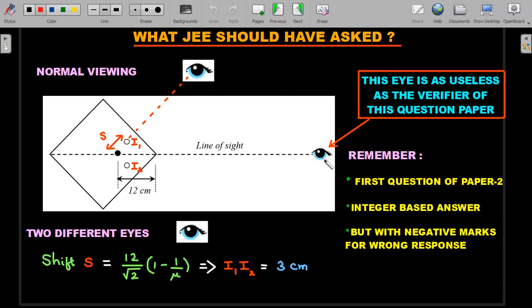This eye that they've given is as useless as the verifier of this particular question paper. This line of sight is definitely not going to give you one unique set of images. Remember why I'm being so critical: this is the first question of Paper 2, it's integer-based, and you have negative marks for wrong responses. Just think what students would have undergone—this confidence-shattering experience at the start of the paper.